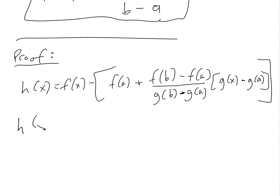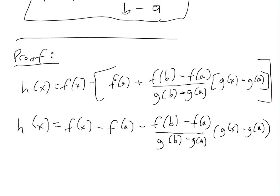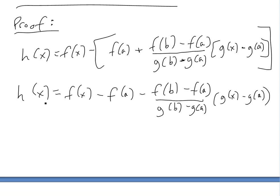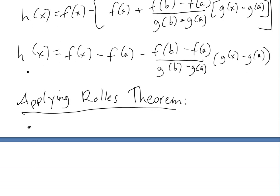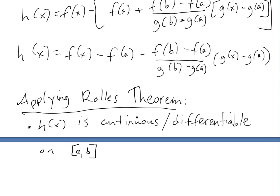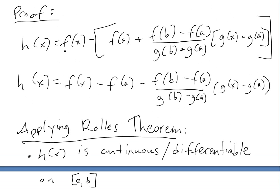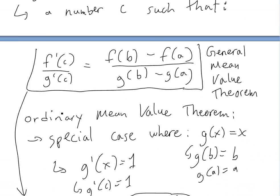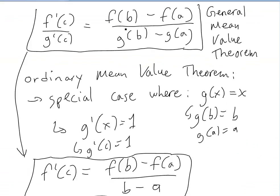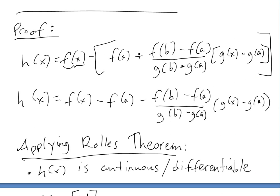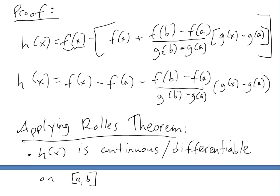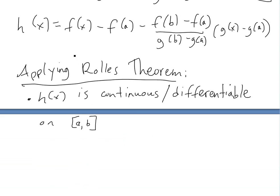We simplify h(x) by expanding the brackets. Now, h(x) is continuous and differentiable because all we're doing is subtracting functions that we assumed are differentiable — as stated in the conditions of Cauchy's theorem. The constants and g(x) terms are also differentiable, so the combination is continuous and differentiable.